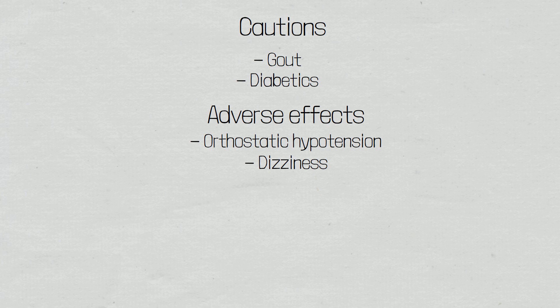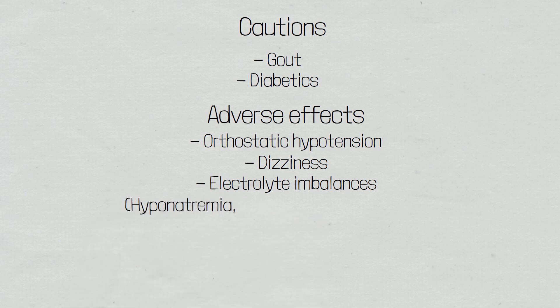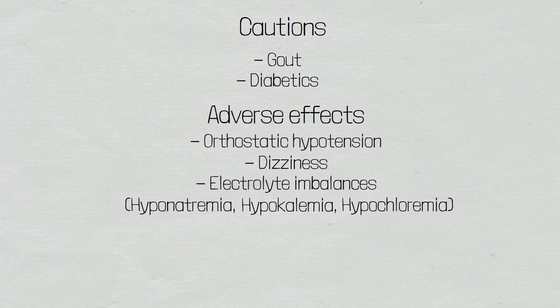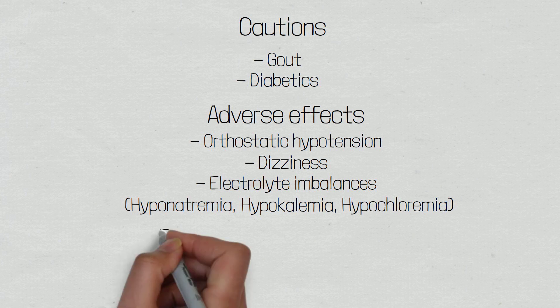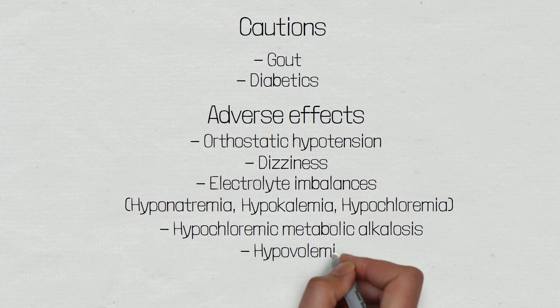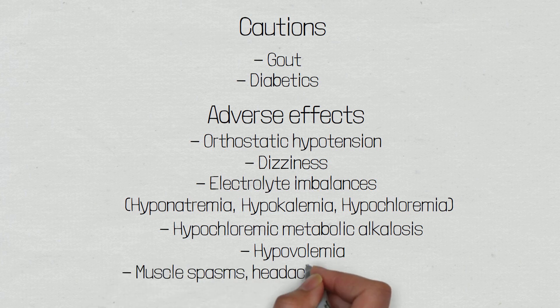Patients may experience electrolyte imbalances due to the loss of electrolytes in the urine. These include hyponatremia, which is low sodium levels, hypokalemia, which is low potassium levels, and hypochloremia, which is low chloride levels. As chloride levels decrease, patients may experience a hypochloremic metabolic alkalosis, which is a metabolic condition in which the pH rises beyond the normal range of 7.35 to 7.45. Patients may also experience hypovolemia, also known as volume depletion, which is a state of abnormally low fluid within the body beyond what was intended when administering the drug. Finally, patients may experience muscle spasms, headaches, nausea and fatigue.